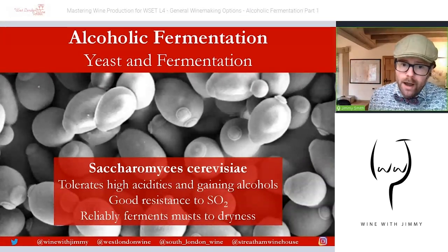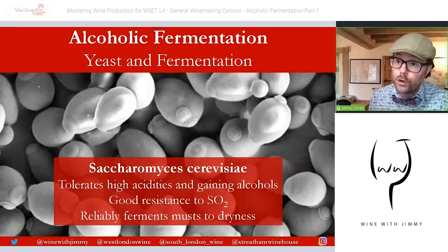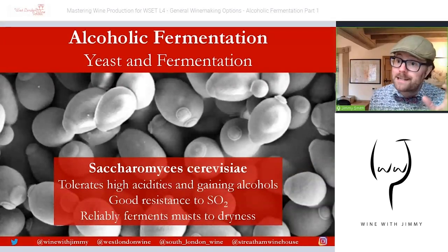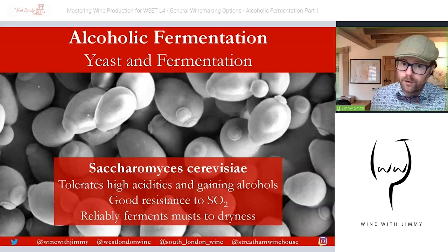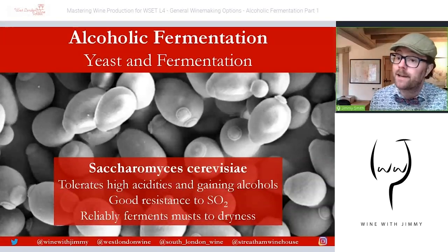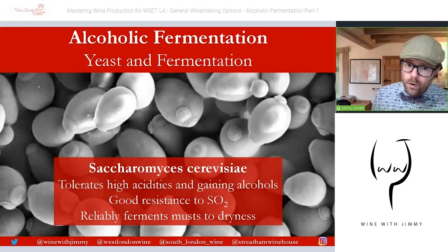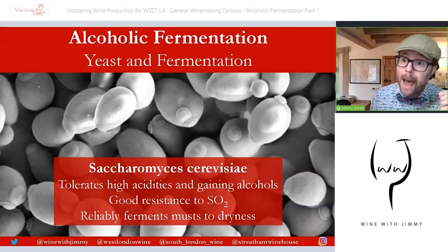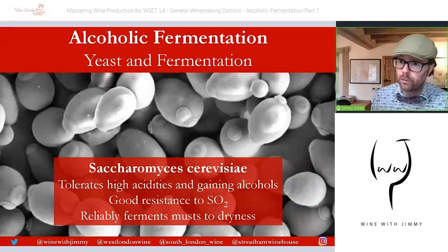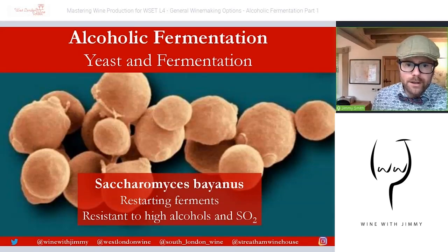Saccharomyces cerevisiae reliably ferments musts to dryness, producing a solid fermentation when conditions are set. There are many strains within the species, giving winemakers the option to select a strain for particular outcomes. For example, some winemakers select a strain to boost aromatic character in Sauvignon Blanc — typically in Marlborough, New Zealand — while others choose either ambient or cultured yeasts to produce a more restrained profile, as in Sancerre or Pouilly-Fumé.